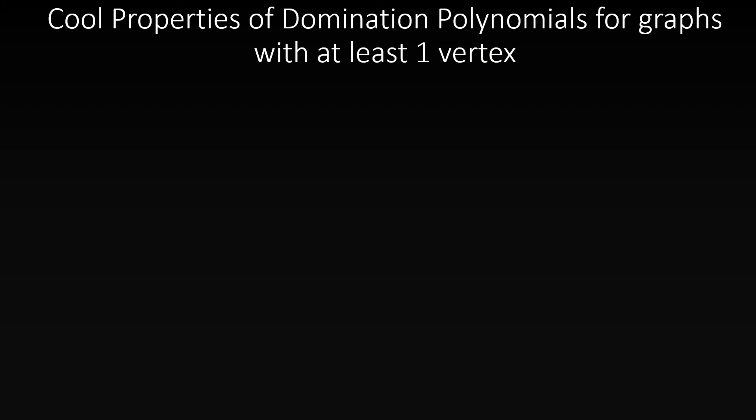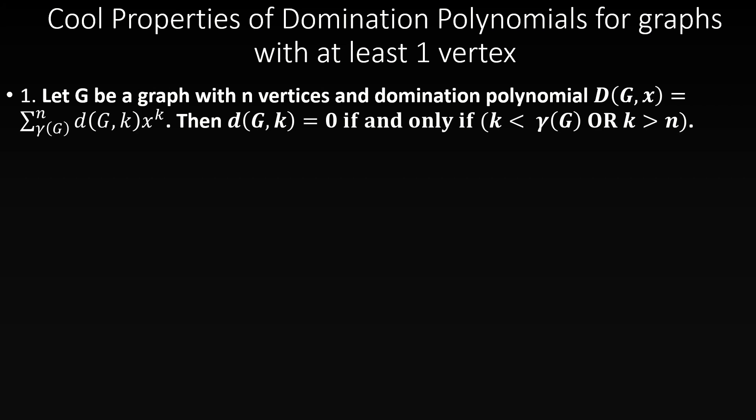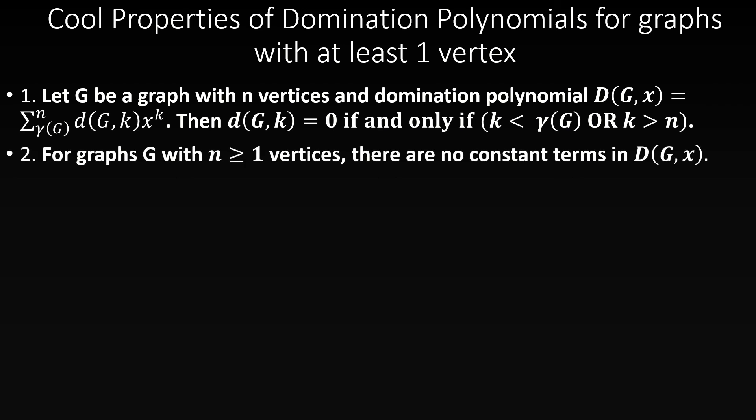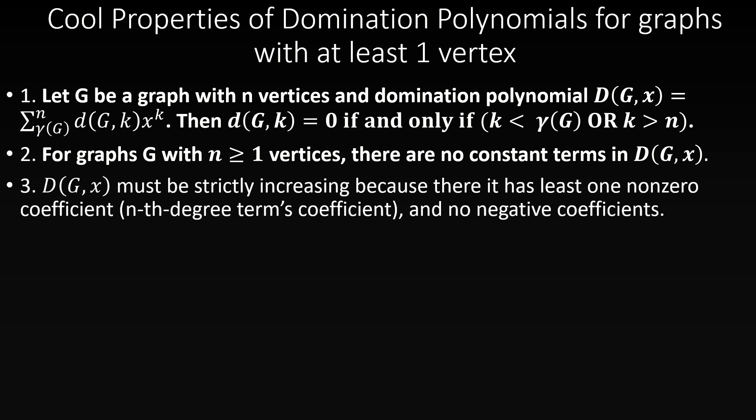Let's move on to interesting properties of domination polynomials. We've already covered two properties: first, the coefficient on the degree-k term is zero if and only if k is greater than the number of vertices or less than the domination number; second, there are no constant terms for any graph with at least one vertex. Now let's look at five additional properties. The domination polynomial of any graph G must be a strictly increasing function, as the coefficients on all non-zero terms are positive.